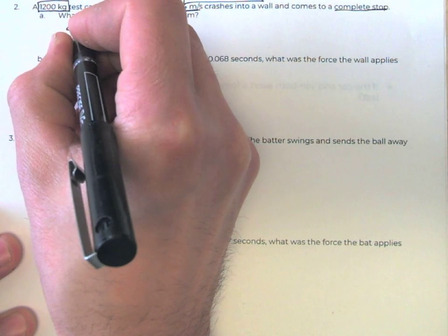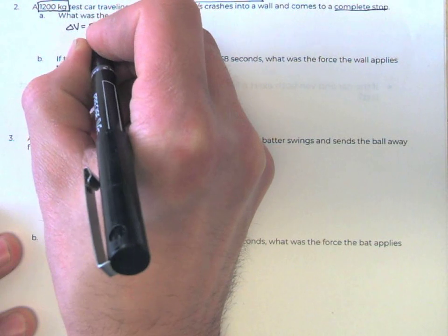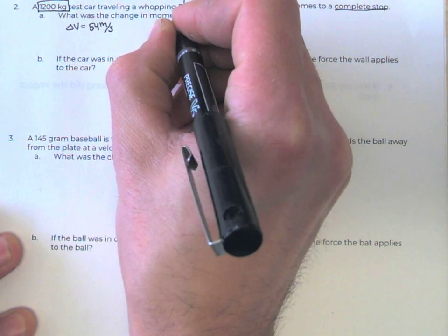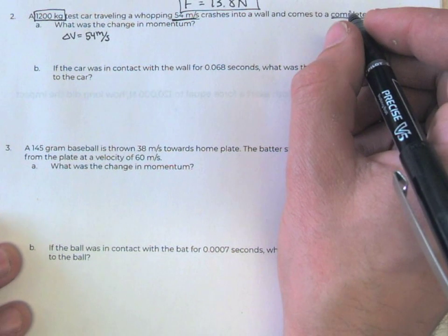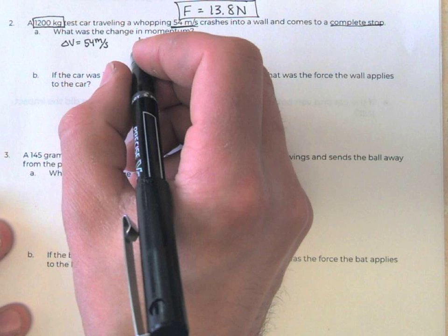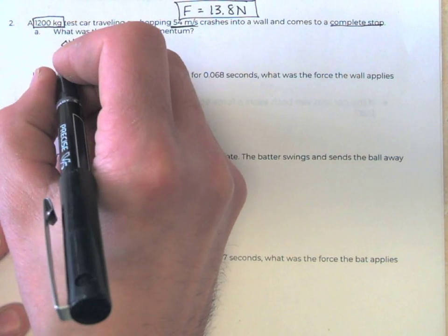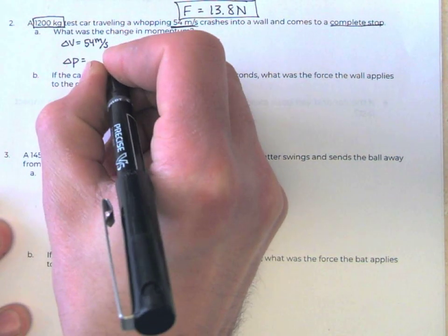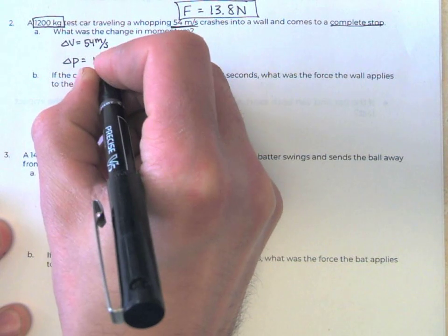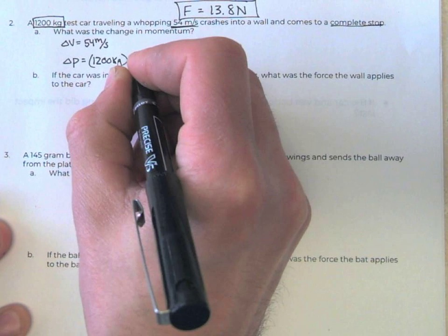So the change in velocity here is 54 meters per second, because it went from having 54 to 0. If we want to know the change in momentum, we just need to include the mass. So the change in momentum equals the mass times the change in velocity.